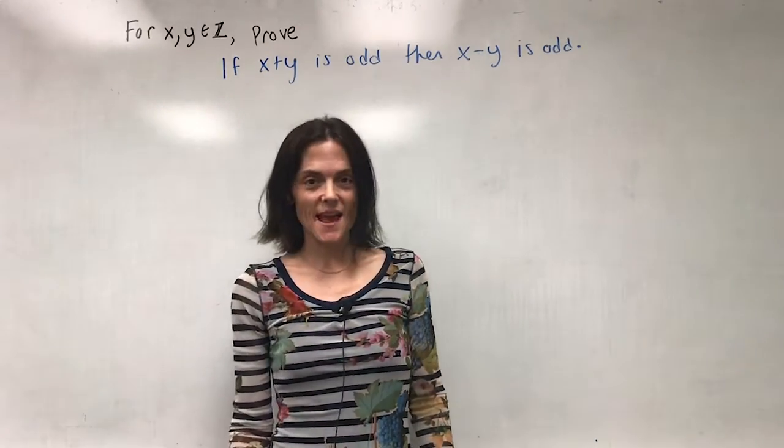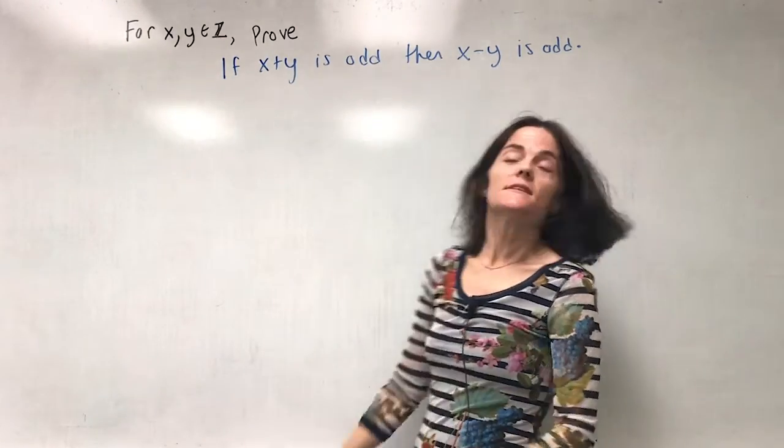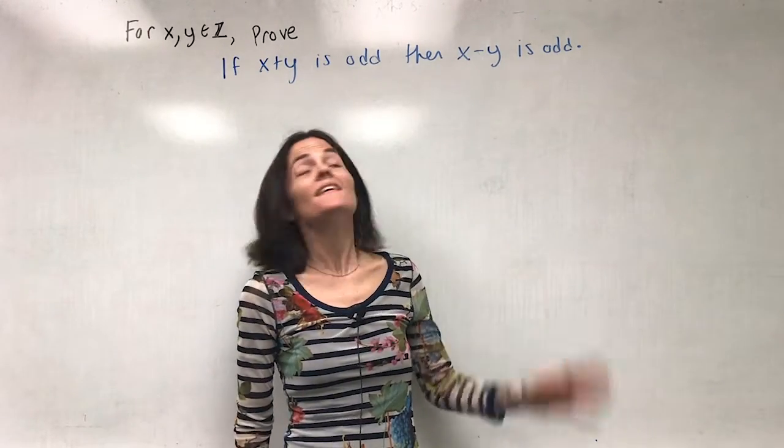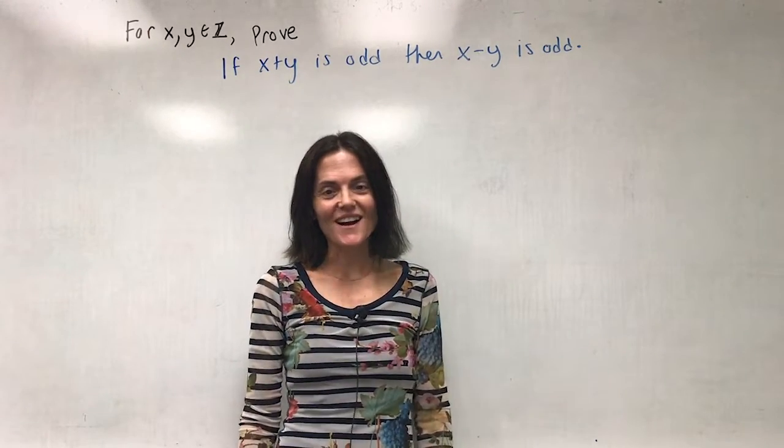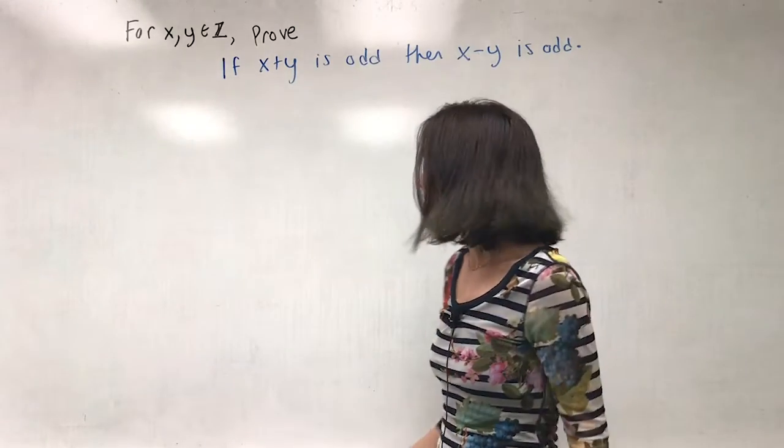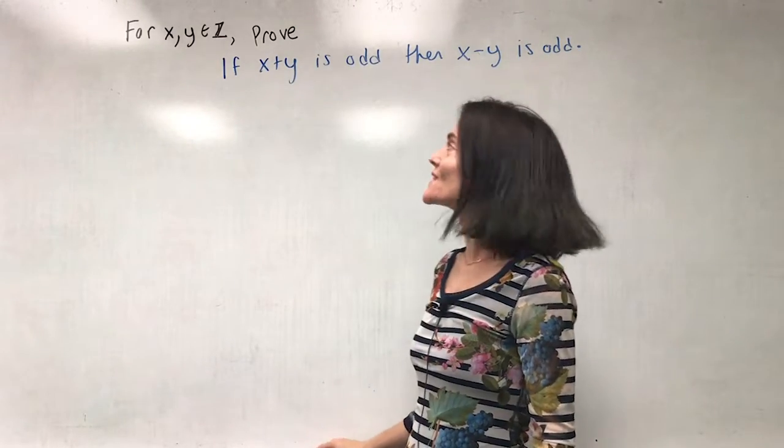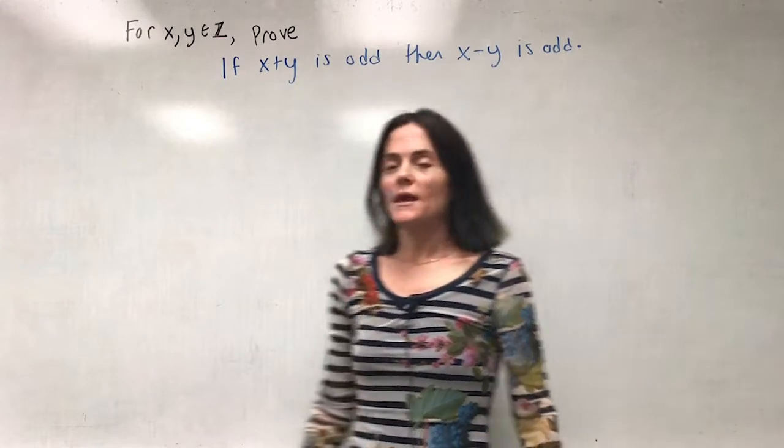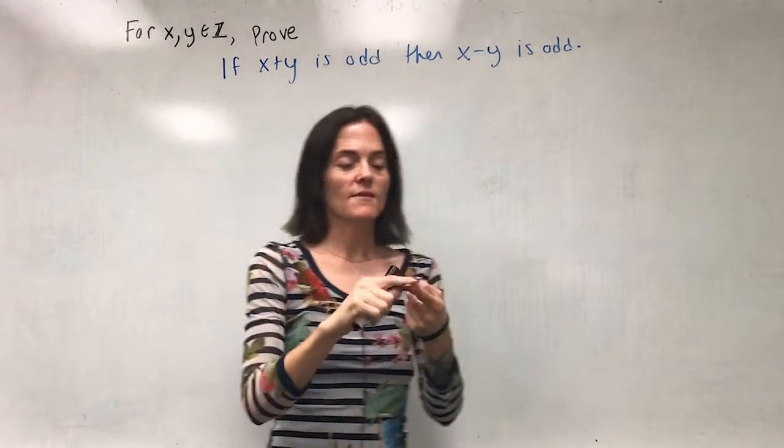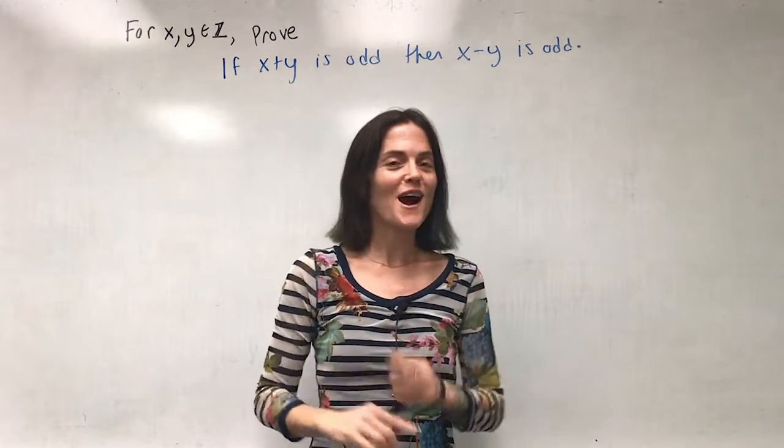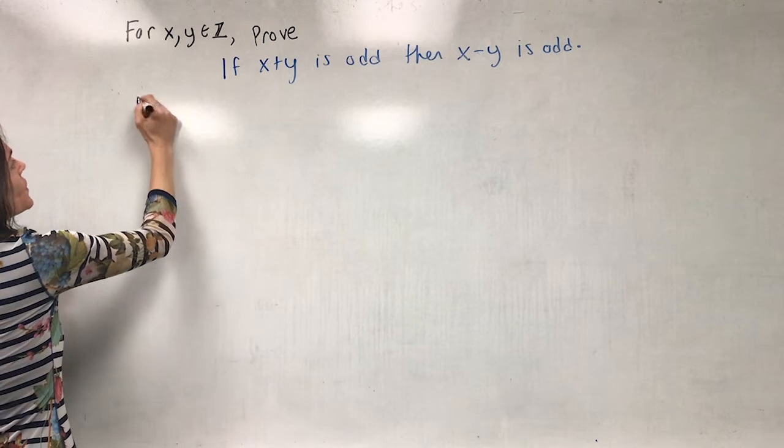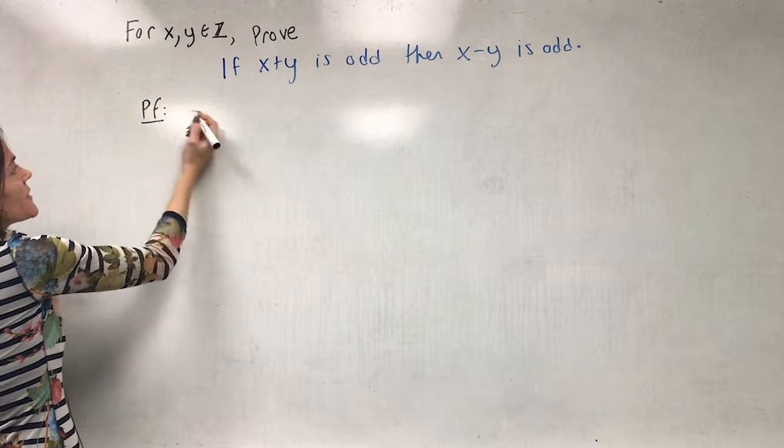Let's prove for x and y integers, if the sum x plus y is odd, then x minus y is odd. This is a direct proof, and it is one of our first. You might think you need to break it into cases - x can be even or odd, y can be even or odd - but we do not need all of that.